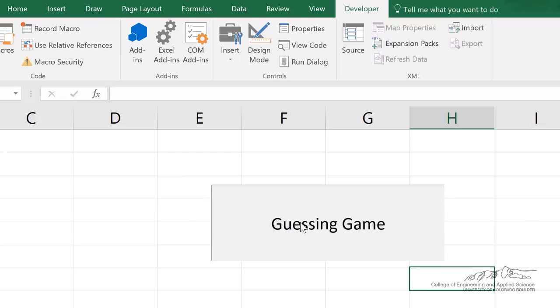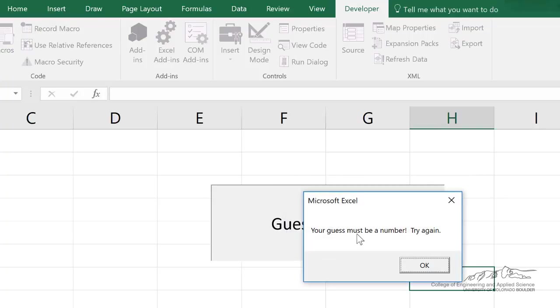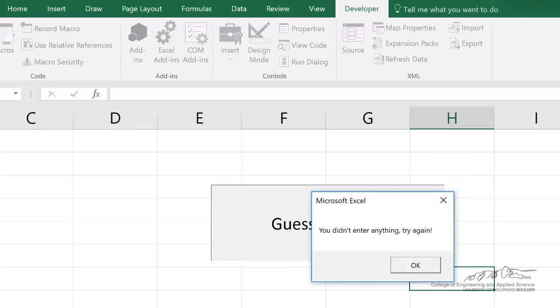So let's run this. Guessing game. I'm thinking of a number. And let's just do all the input validation, string. Your guess must be a number. Try again. Now if we just submit a blank, it's going to say you didn't enter anything. Try again. If I do cancel, then it just shuts down.